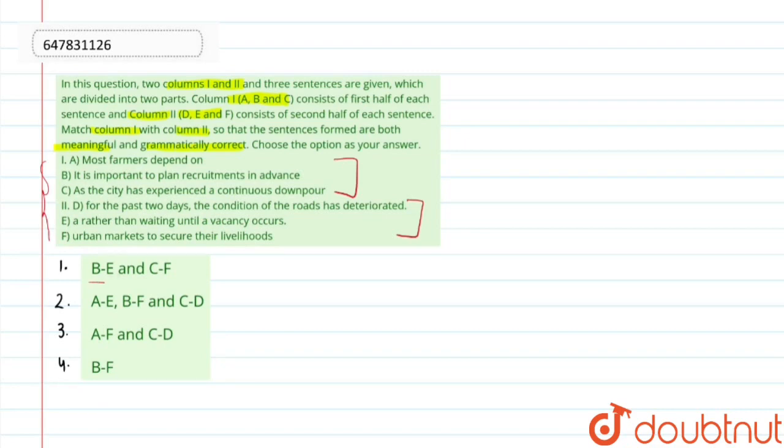Options are: B-E and C-F; A-E, B-F and C-D; A-F and C-D; or B-F. Well, the correct answer is option number 3: A-F and C-D.